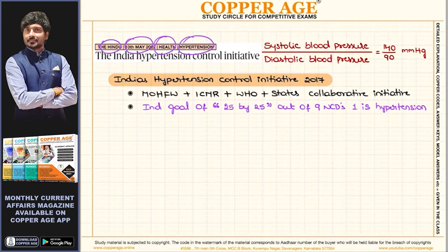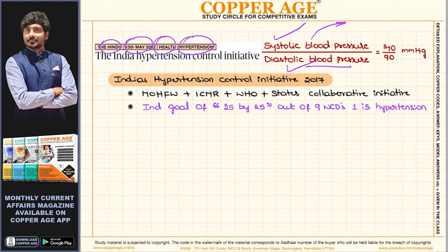First of all, hypertension involves systolic blood pressure and diastolic blood pressure. Systolic blood pressure is when the heart squeezes and pumps blood, creating blood pressure, then relaxes. The threshold is 140 by 90 mm of Hg — this is the blood pressure level for hypertension.